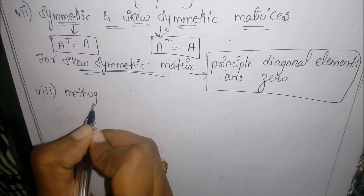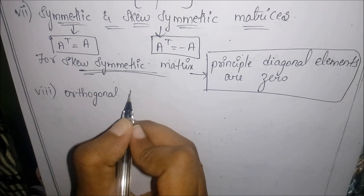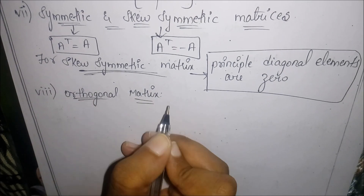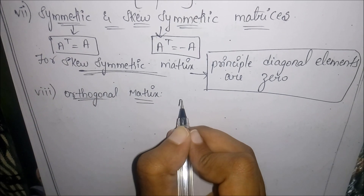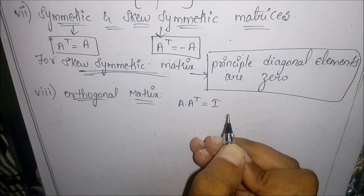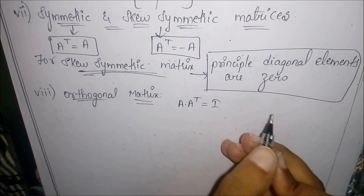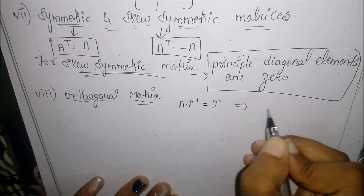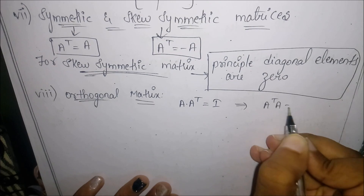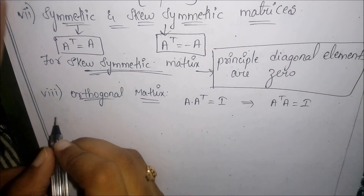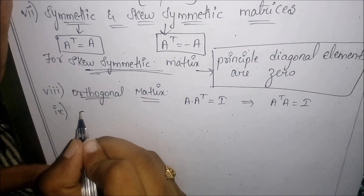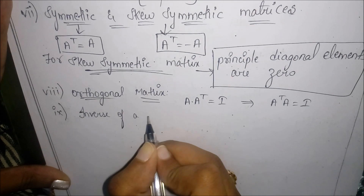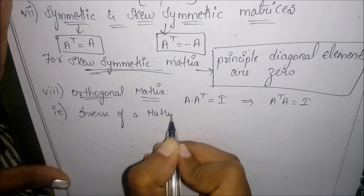The next topic is an orthogonal matrix. A square matrix A is called orthogonal if A multiplied by A transpose equals the identity matrix I, or equivalently A transpose multiplied by A equals I.